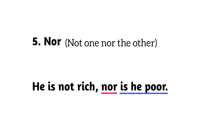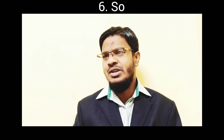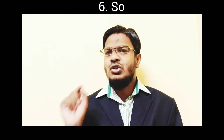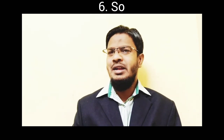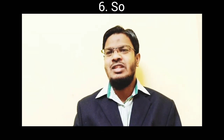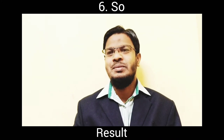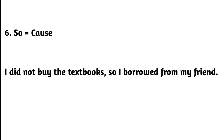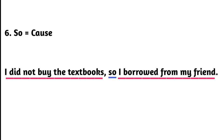Number six: 'so.' So is used to combine two simple sentences that show a result. Look at this example: 'I did not buy the textbooks so I borrowed from my friend.' You can see 'so' is used to combine two simple sentences that show a result.